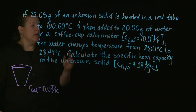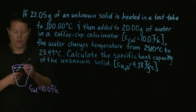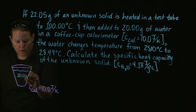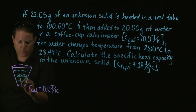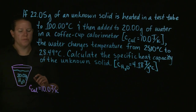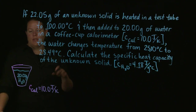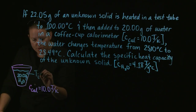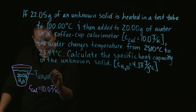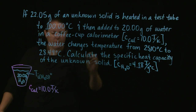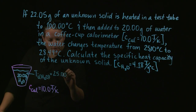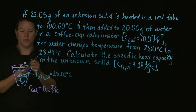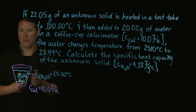It's joules per Kelvin. In my lovely coffee cup calorimeter, I have 20 grams of water. What's the initial temperature of the water? Do I have an initial temperature of the water? Indeed I do. I know that the water went from 25.00 degrees Celsius to 28.49 degrees Celsius. So not only do I have an initial temperature of the water, I have a final temperature of the water.